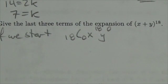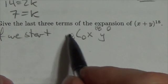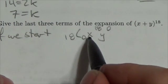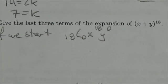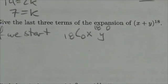because the truth is you might start at the other end and make this 18 choose 0, x to the 0, y to the 18. Because there's addition here, you can kind of play with the order a little bit.